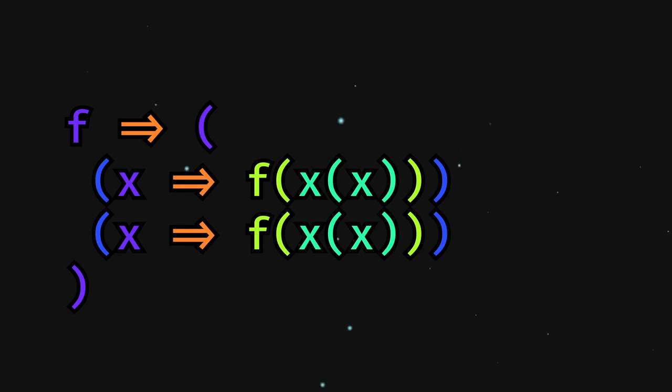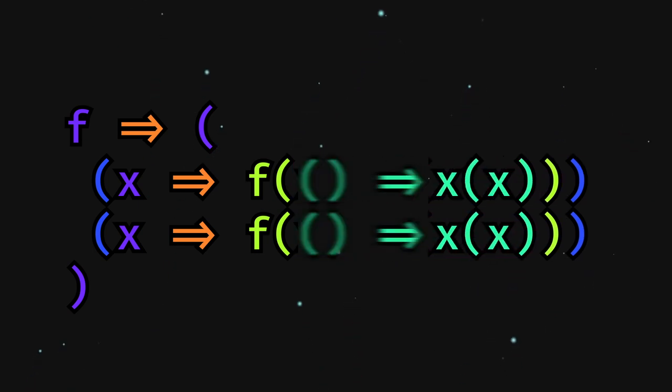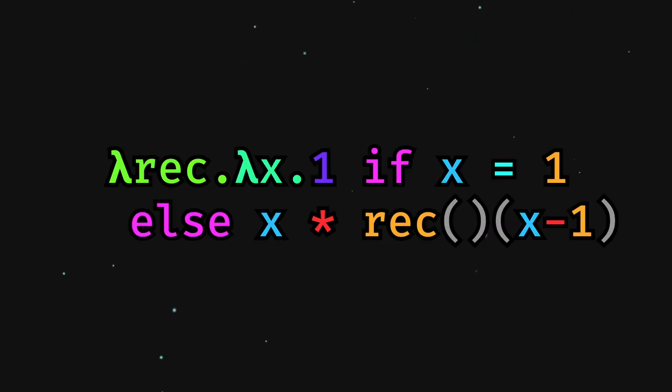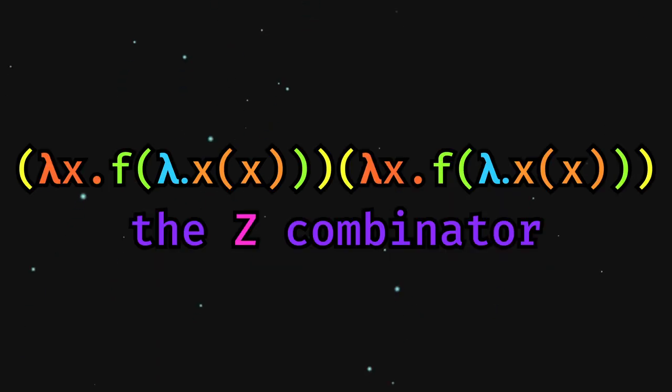This can be remedied by converting the x of x terms with simple functions returning x of x. Then, when we use the rec argument, we just need to call it with no arguments, and then use the return value of that. This is known as the Z-combinator.